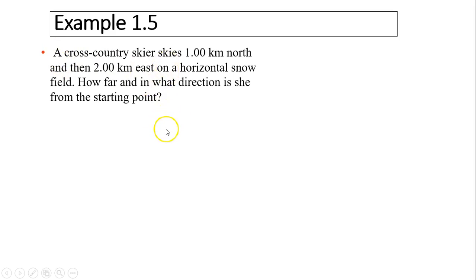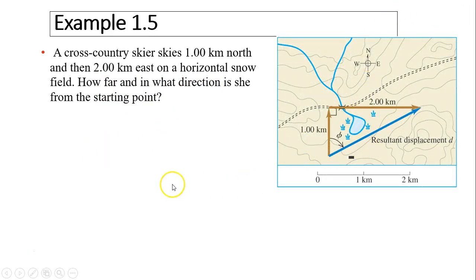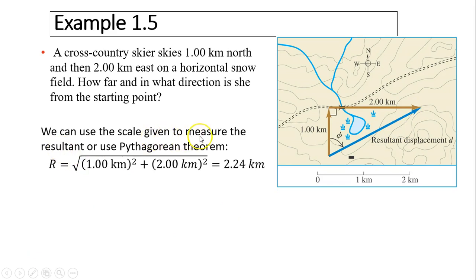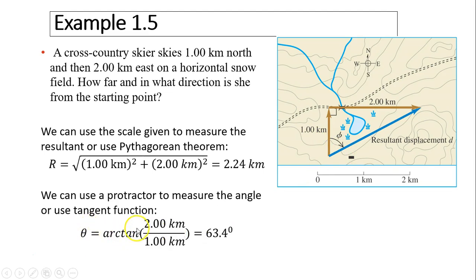Take a look. This is an example in your textbook. So cross country skiers skis 1 km north then 2 km east on a horizontal snow field. How far and in what direction? So magnitude and direction of this vector. Here is the diagram. So how far is this blue vector? What's the length? And what is the direction? We can use the scale given to measure the resultant very carefully. Or we can use Pythagorean theorem. a squared plus b squared. So I use the Pythagorean theorem is 2.24 km. To find direction means to find this angle. So that phi actually should be inverse tan of opposite which is 2 over adjacent which is 1. So you should have 63.4 degrees. That is the direction. In this, this would be east of north at 63.4 degrees.